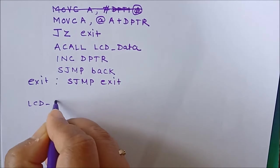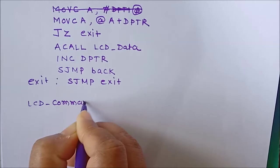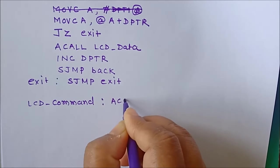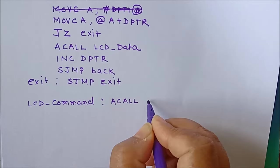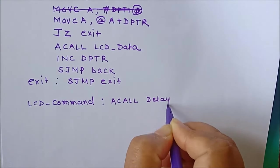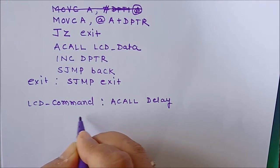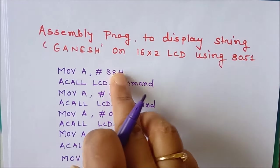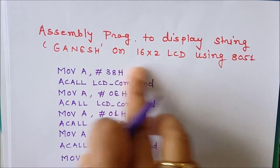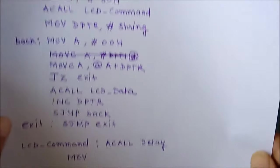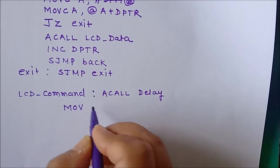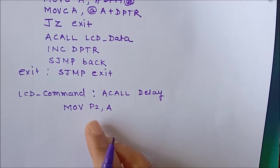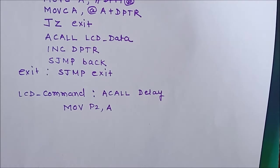Now we write the LCD_command subroutine. Before writing the command, we call a short delay subroutine named 'delay'. Then, whatever command is stored in the accumulator in the main program — for example 38H — we place that data onto the data bus, which is port P2.